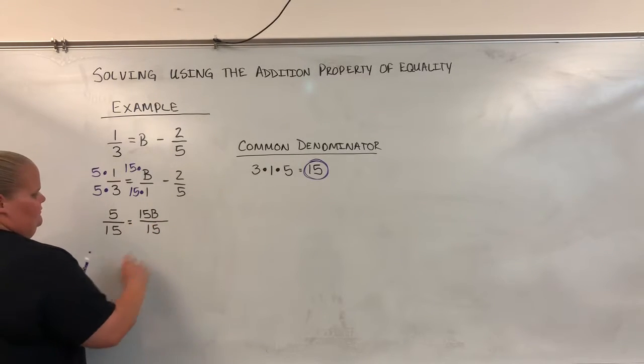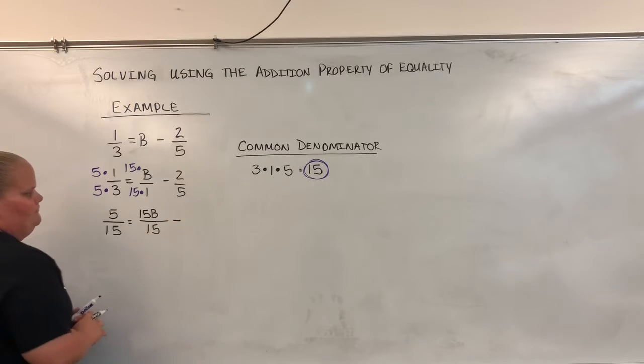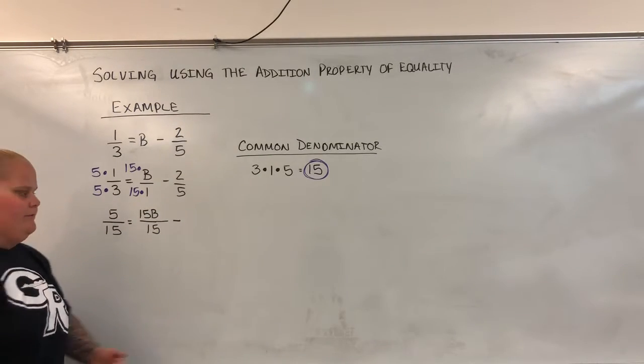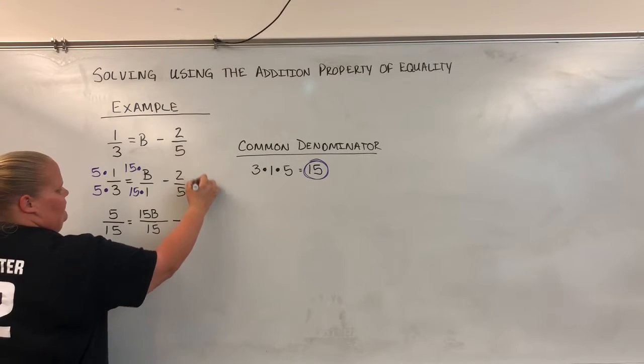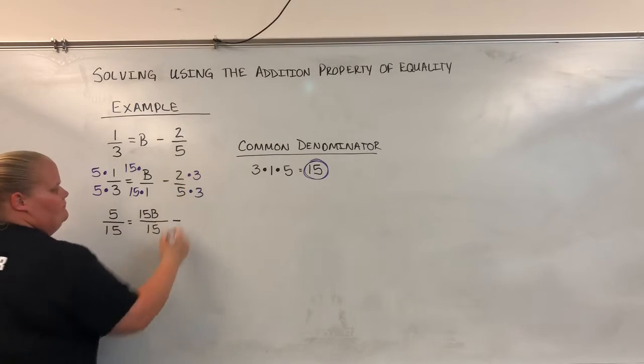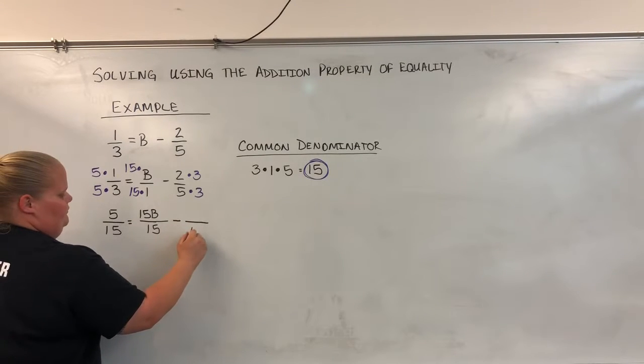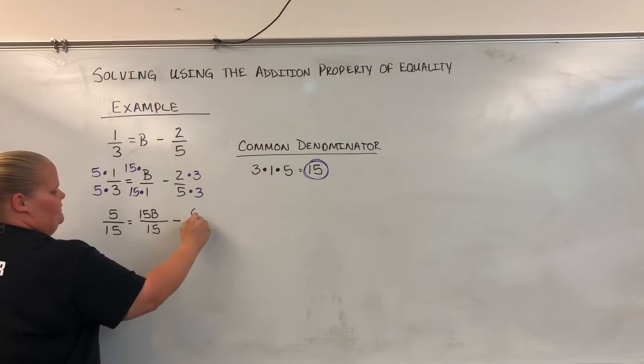The last fraction, this negative 2 over 5, how do I get it from 5 to 15? I multiply it by 3. Again, whatever is done to the bottom has to be done to the top. So we're going to go ahead. The bottom is now 15, and the top is 6.